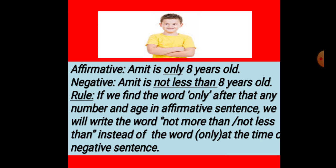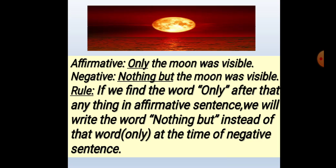You can see only two words. We can write the word 'not less than' or 'not more than.' Now you see this one: 'Only the moon was visible.' The negative form is 'Nothing but the moon was visible.' If we find the word 'only' before anything in an affirmative sentence, we will write the word 'nothing but' instead of that word at the time of negative sentence.